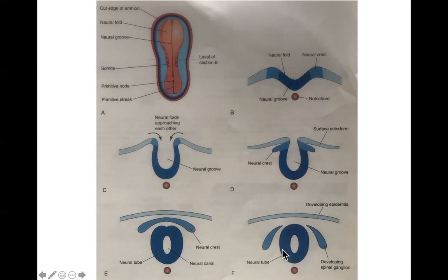The neural tube is destined to become the brain and the spinal cord. The neural crest cells migrate laterally and become things like the spinal ganglia, the ganglia of the autonomic nervous system, the sheaths of the peripheral nervous system, the inner layers of the meninges — the pia and arachnoid mater — and the cranial nerve ganglia for cranial nerves 5, 7, 9, and 10, among many other neural structures. The surface ectoderm is mostly going to become skin.